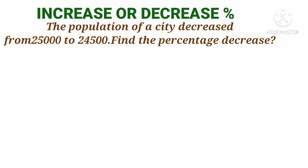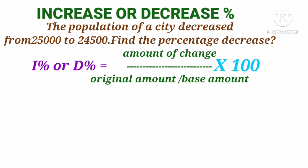For example, the population of a city decreased from 25,000 to 24,500. Find the percentage decrease. Here we have to find decrease percentage. We have learnt the formula to find decrease or increase percentage: it equals amount of change divided by original amount or base amount, into 100 percentage.